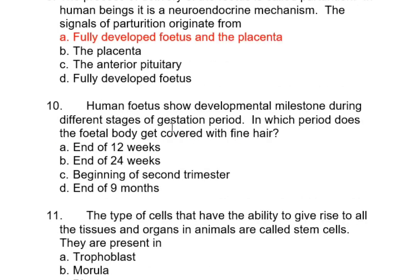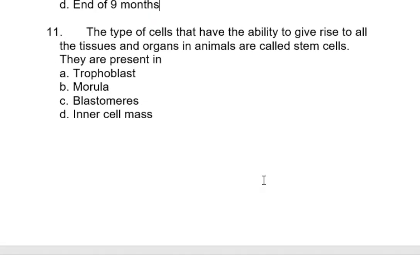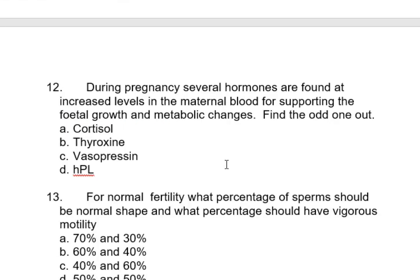Human fetus shows developmental milestones during different stages of the gestation period. In which period does the fetal body get covered with fine hair? It is at the end of 24 weeks. Cells that have the ability to give rise to all tissues and organs in animals are called stem cells. They are present in the inner cell mass of the blastocyst, which is the age of the embryo that gets implanted in the uterine wall. The blastocyst has an outer layer called the trophoblast and a tuft of cells called the inner cell mass, which consists of stem cells.